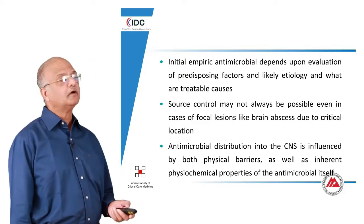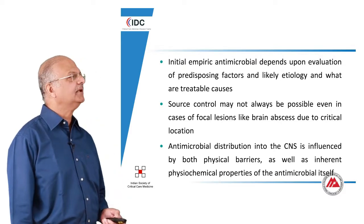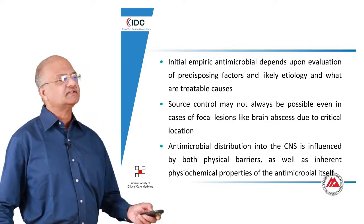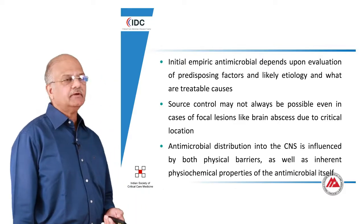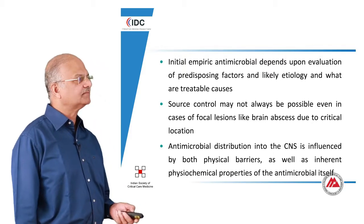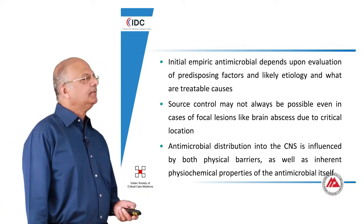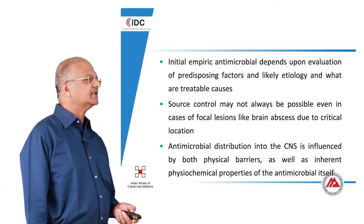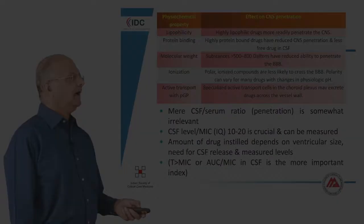The initial empiric antimicrobial depends upon evaluation of predisposing factors in that particular host, which will obviously determine the etiology. The clinician must also keep in mind which of all these are treatable causes. Source control, always discussed in serious infections, is not always possible even in focal infections such as brain abscess, due to the critical location of the brain lesion. Finally, antimicrobial distribution into the CNS is influenced by many factors, both physical as well as physicochemical properties of the antimicrobial itself.